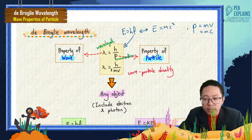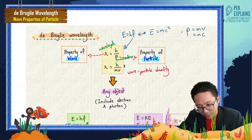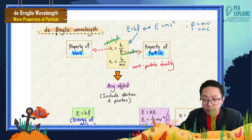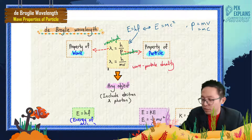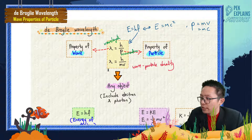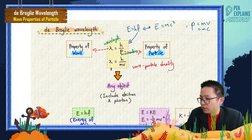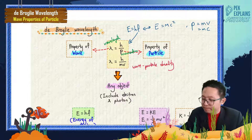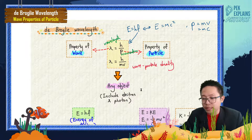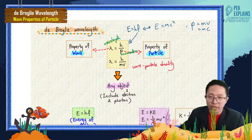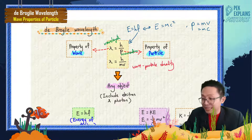This is the de Broglie wavelength formula. Questions will ask you to find the de Broglie wavelength of any object — a proton, an electron, a photon, even a human. This formula can be used for any object, big or small.